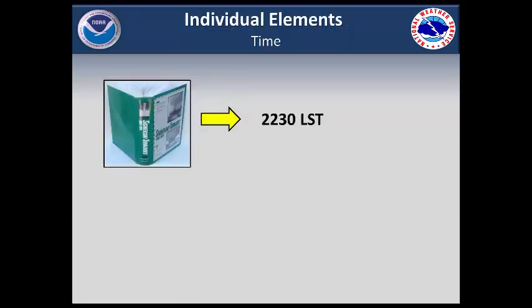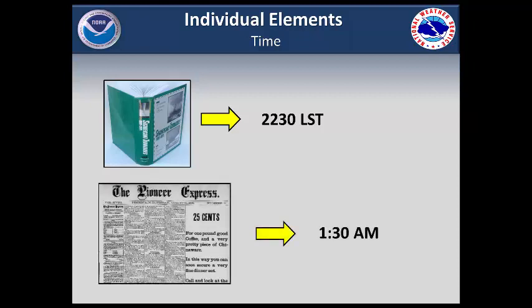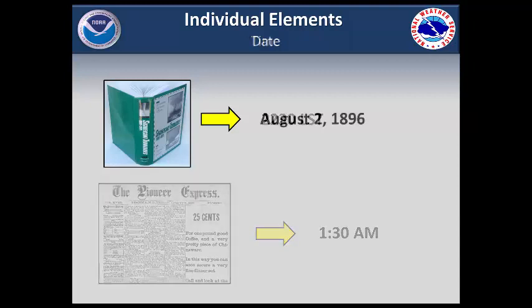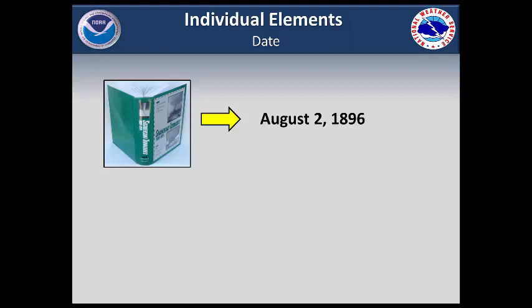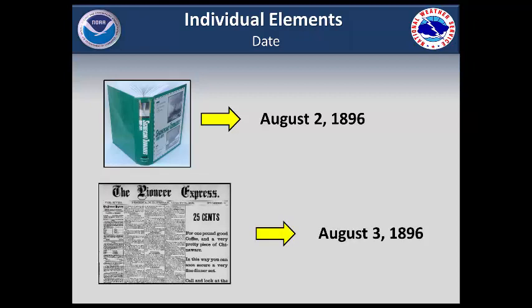The Significant Tornadoes book said the tornado hit at 2230 local standard time. In 1896, time was not kept the same way it is today, so what 2230 meant was somewhat in question. North Dakota newspapers in August 1896 say the storm hit at 1:30 a.m. Significant Tornadoes records the date of this tornado as August 2; however, 1:30 a.m. was likely August 3. This is a good example of how dates and times can easily be confused.